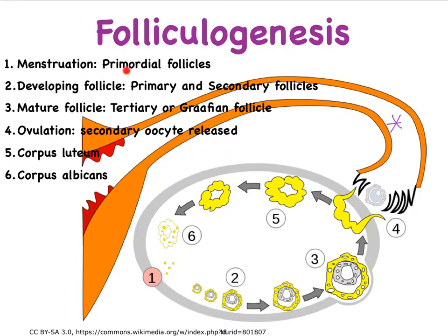So to summarize: we go from primordial follicles to primary, secondary, and tertiary follicles. The tertiary follicle contains a secondary oocyte that can be released from the ovary through ovulation. The granulosa cells that stay behind in the ovary become part of the corpus luteum, which eventually, if pregnancy does not occur, turns into scar tissue referred to as the corpus albicans.